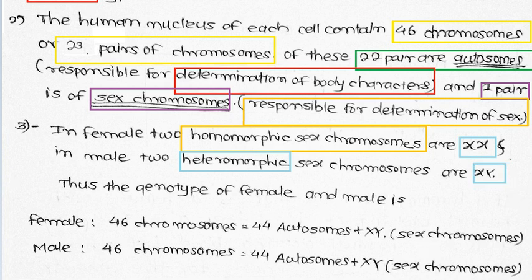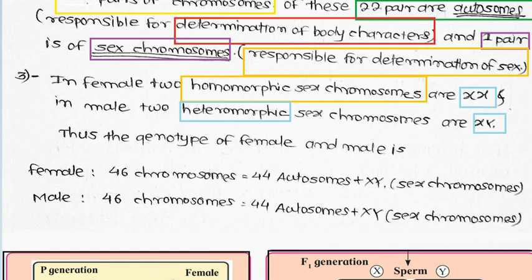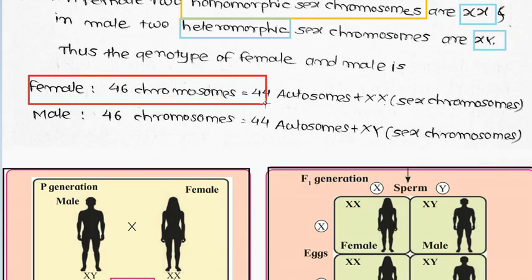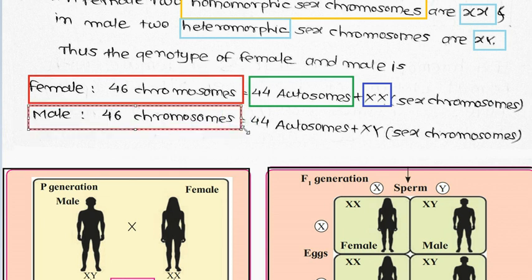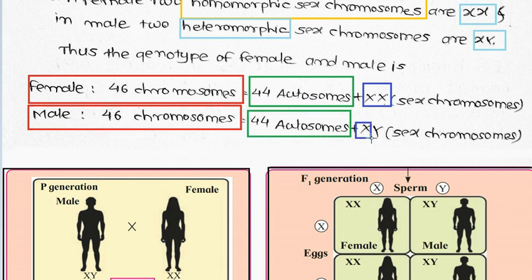So the genotype of the female and male: females have 46 chromosomes, in which 44 are autosomes and the sex chromosome is XX. In males, 46 chromosomes, in which 44 are autosomes and the sex chromosomes are X and Y. Female XX is homomorphic; male X and Y is heteromorphic.